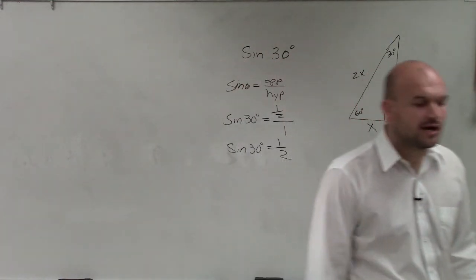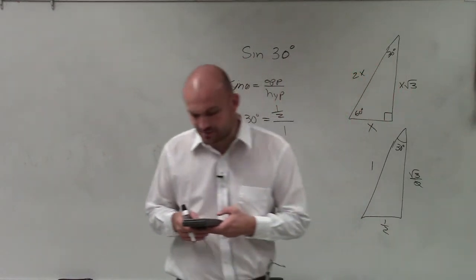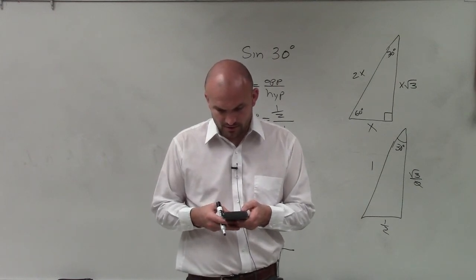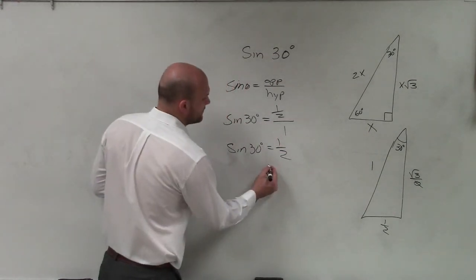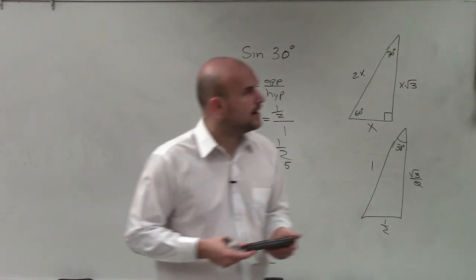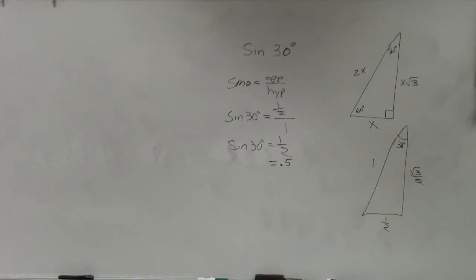Now, you can also just take your calculator. And what they're trying to do is get you guys a relationship to understand that the sine of 30 degrees is just going to be equal to 1 half. So if you plug it into your calculator, you can see that it's equal to 1 half. It's also equal to 0.5.